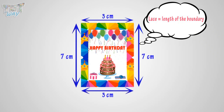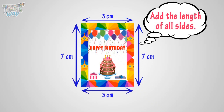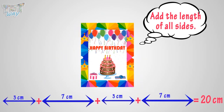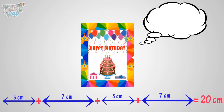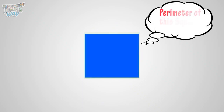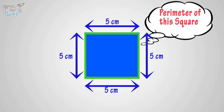Adding all sides, we get 20 centimeters. Here, 20 centimeters is the perimeter of your card. Let's take another example — can you find the perimeter of this square of side 5 centimeters? Look at the figure.